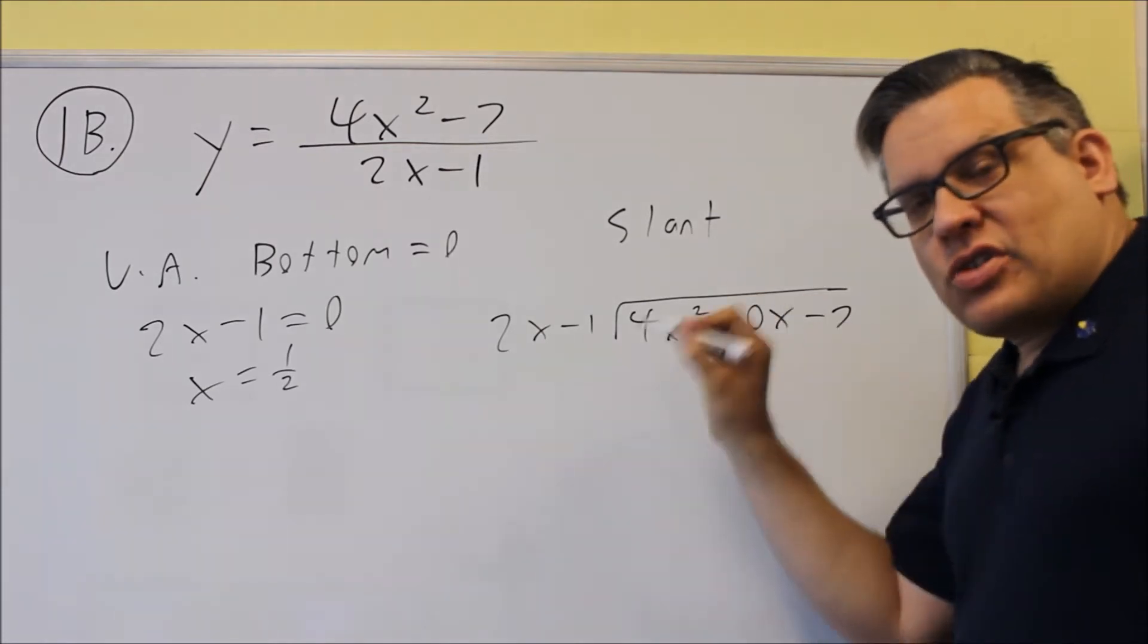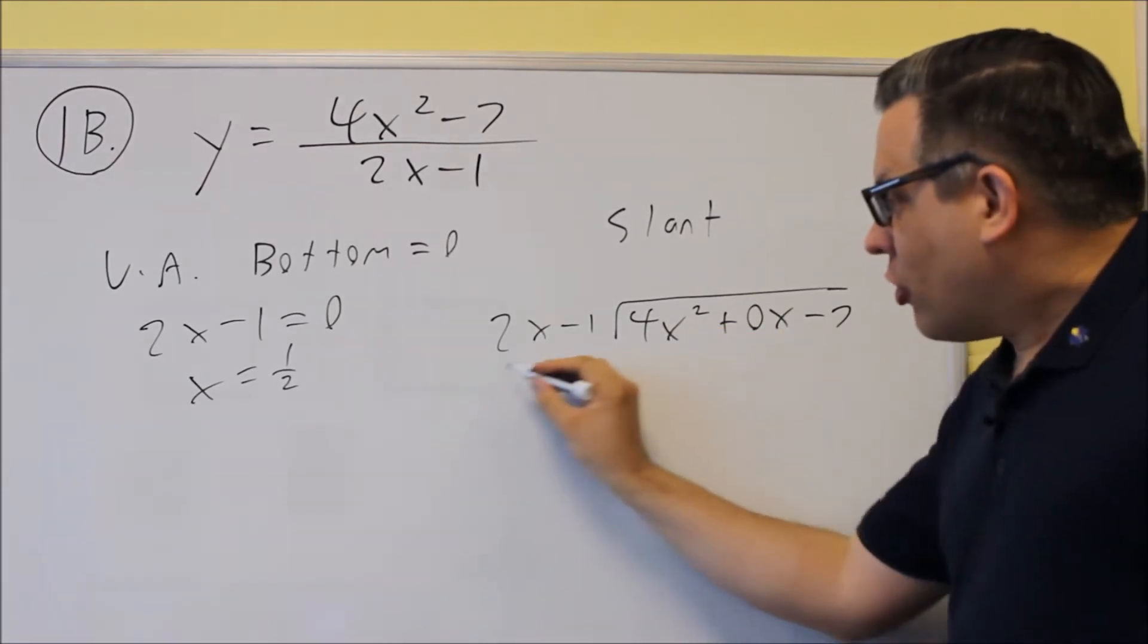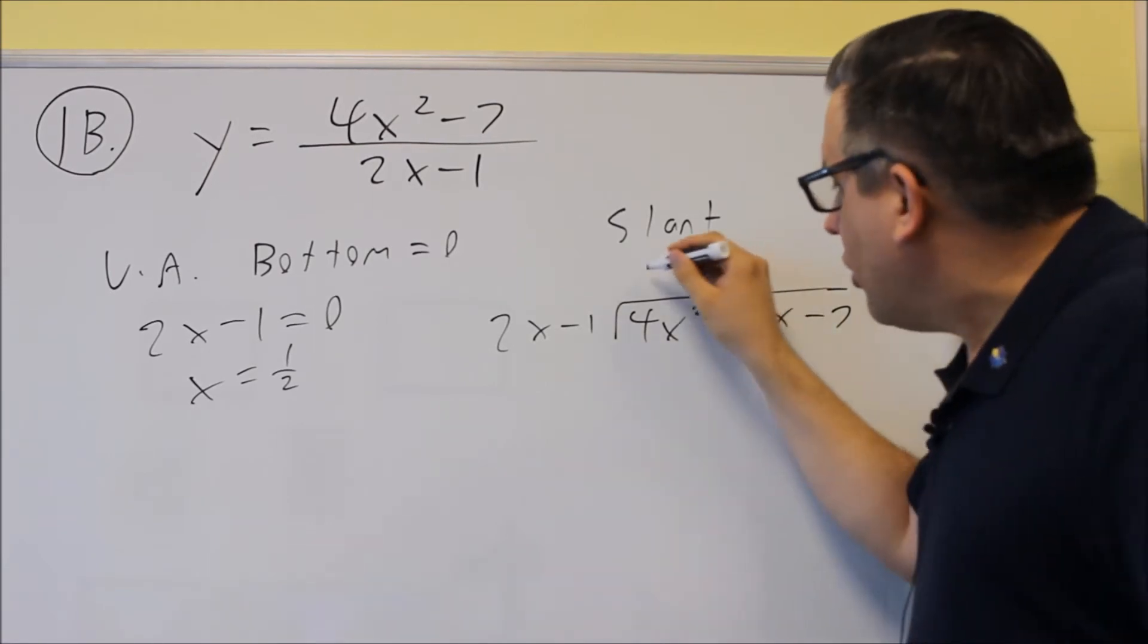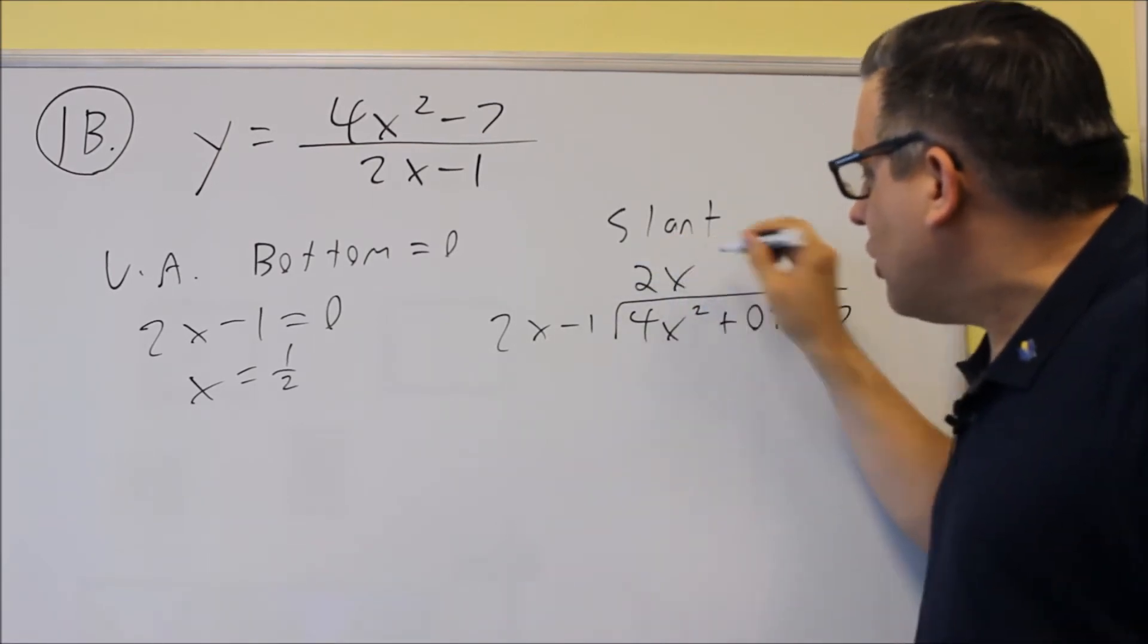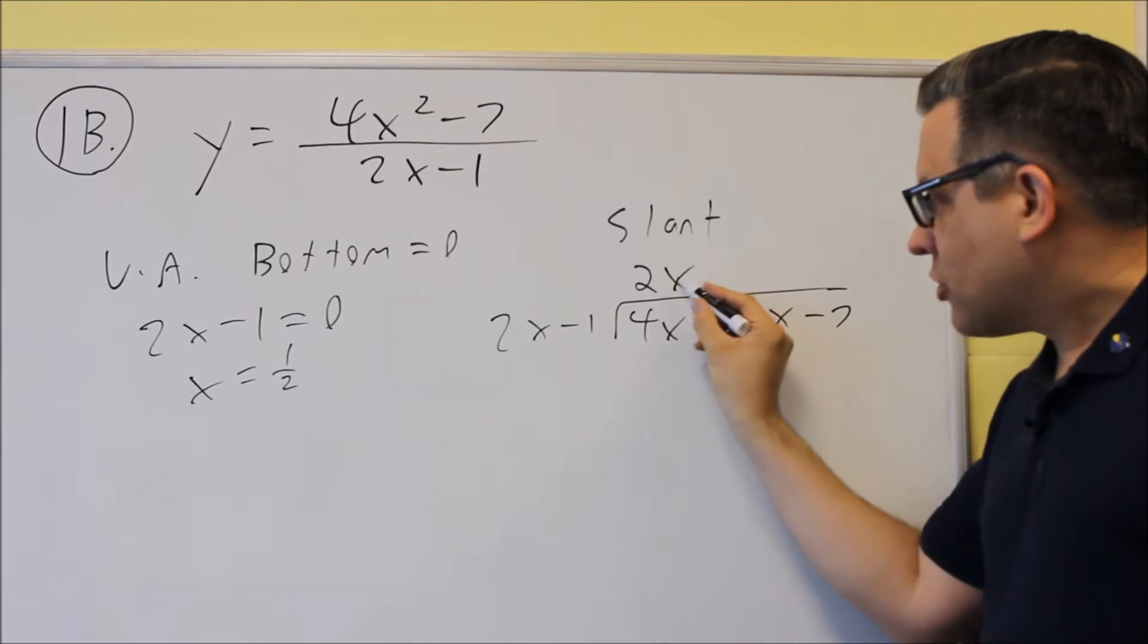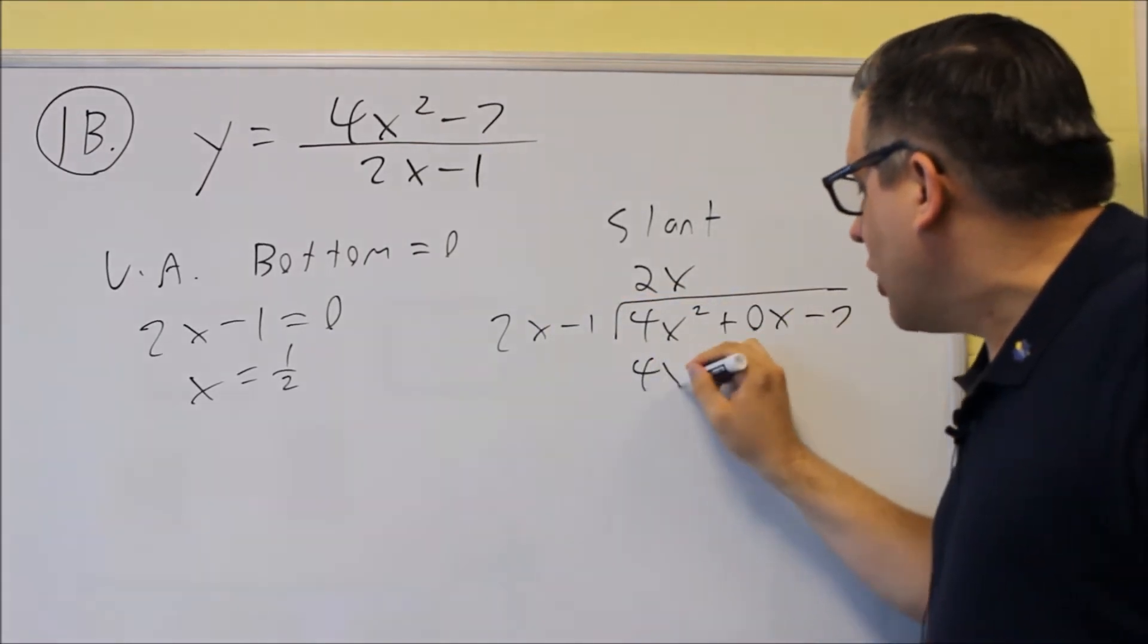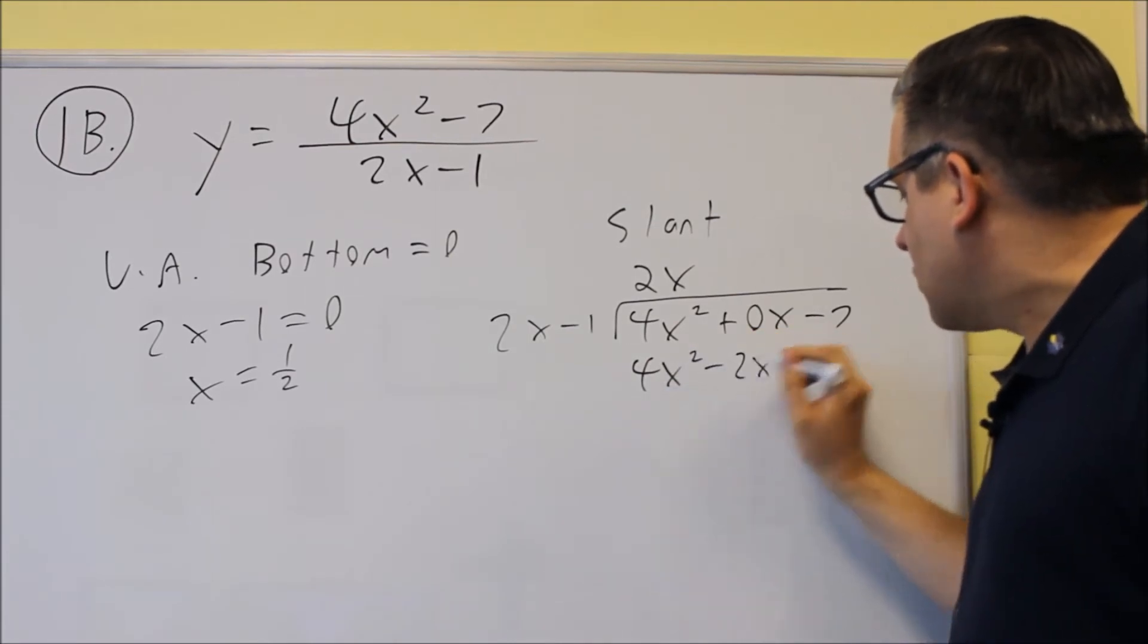Once it's set up, we go through the same process as before. What do I have to multiply 2x by in order to get 4x squared? We're going to need a 2, but we also need another x. And you'll multiply this by both things out front, and you'll put your results down here. So we're going to do 4x squared minus 2x.